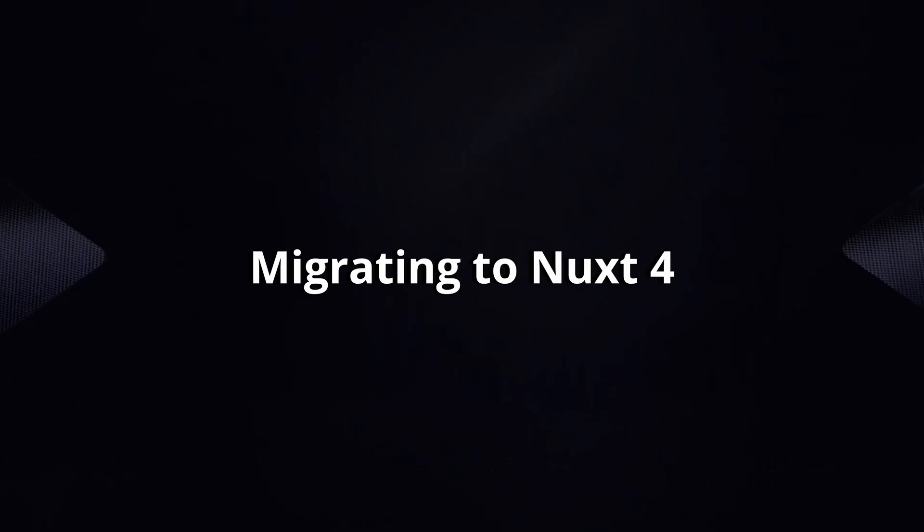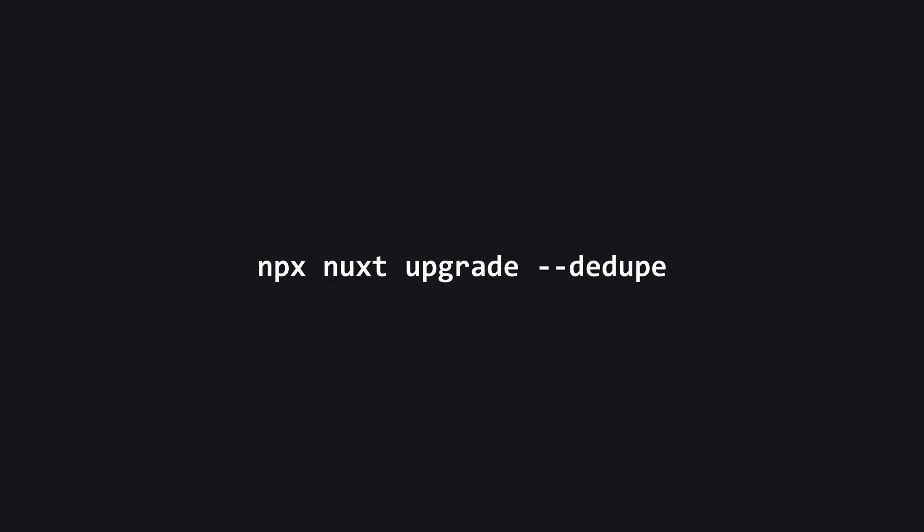Now let's go through the process of migrating your Nuxt 3 app to Nuxt 4. First, you'll have to install or update your app using the following command: npx nuxt upgrade with the --dedupe flag. Once your app is upgraded, there's only one or two things you need to do if you want to use the new file structure.